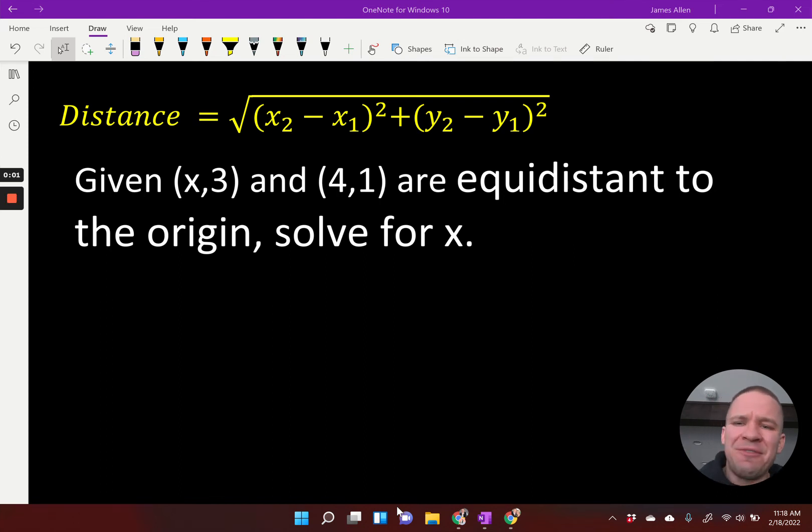Another example: given (x,3) and (4,1) are equidistant to the origin, solve for x.